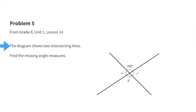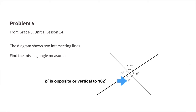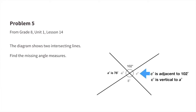Number 5. The diagram shows two intersecting lines. Find the missing angle measures. Part A: What number added to 102 equals 180? A plus 102 equals 180, which is the same as 180 minus 102 equals A. And 180 minus 102 is 78. So A measures 78 degrees. Part B: B is the opposite or vertical angle to 102 degrees. B has a measure of 102 degrees. Part C: C is adjacent to 102 and is vertical to A. Since angle A is 78 degrees and angle C is vertical to angle A, angle C is also 78 degrees.